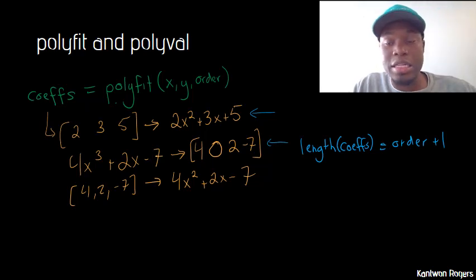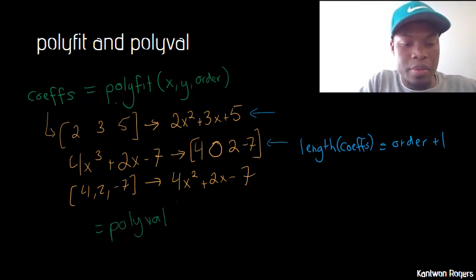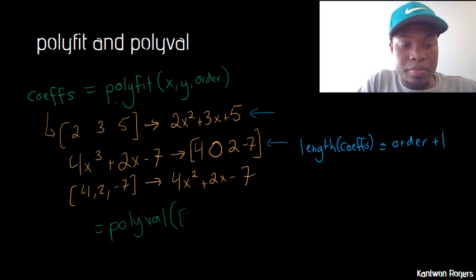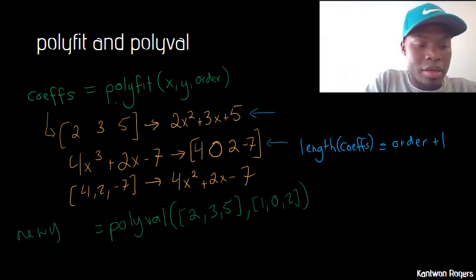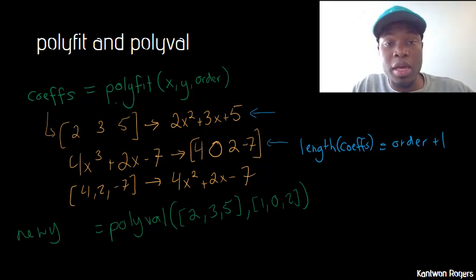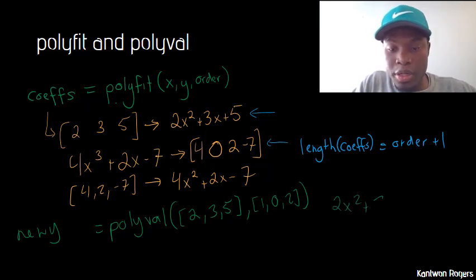Polyval does exactly what the name of the function would cause you to think it does — it plugs in values to your polynomial. It takes in a coefficient vector, for instance [2, 3, 5], and then it takes in new x values. What it outputs are new y values. Essentially, what it's doing is plugging in the numbers one by one to your polynomial.